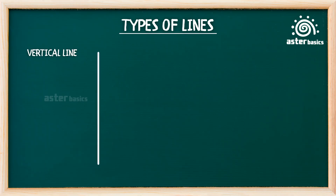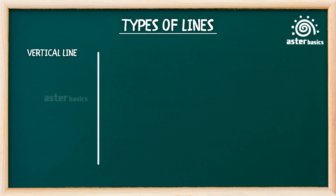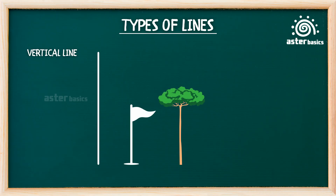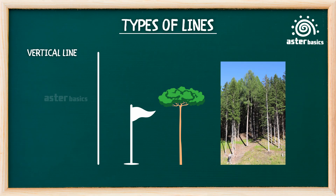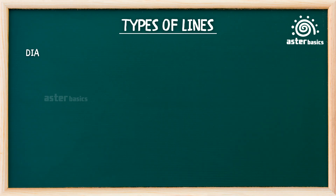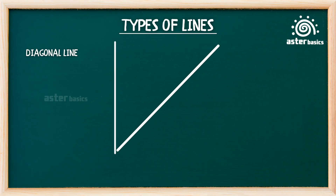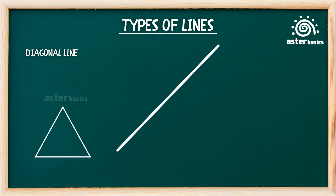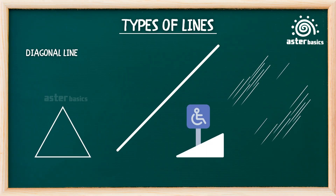Vertical line: a straight line that stands tall, going from top to bottom or bottom to top. Vertical lines are used to draw flagpoles and tall tree trunks. The vertical line, whether it drops from the sky or grows up from the ground, stands like a proud eucalyptus tree — straight and tall, always perfectly upright. Diagonal line: a straight line that slants or tilts, not up, not sideways, but somewhere in between. Diagonal lines are used to draw triangles, ramps, and action lines. This line is always leaning or running, like it's zooming into action.